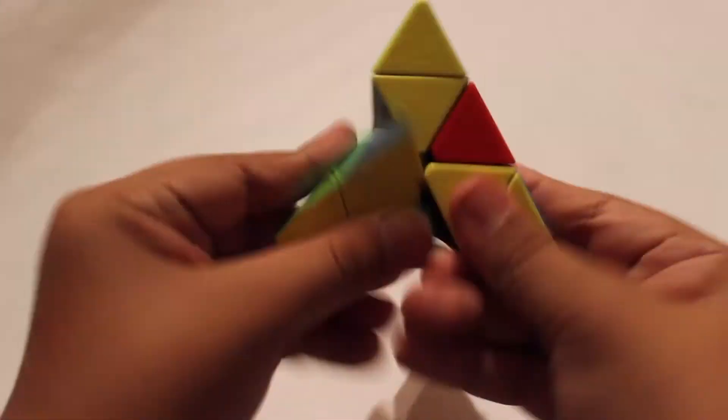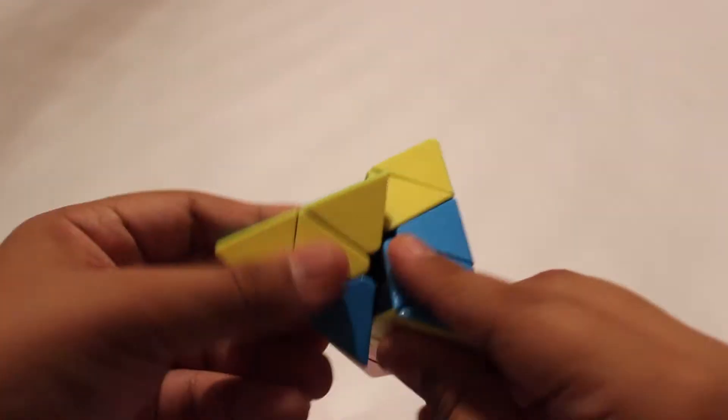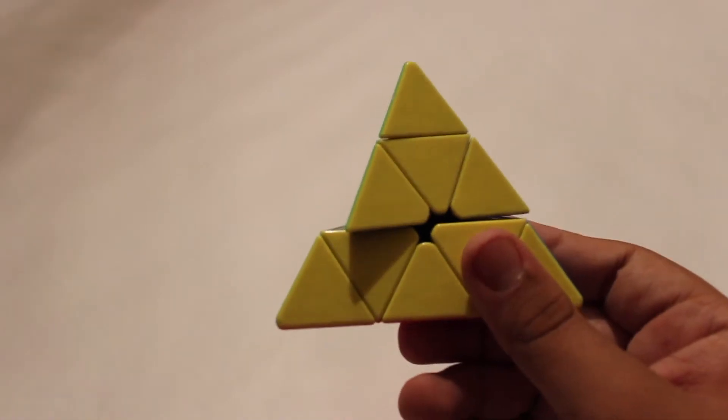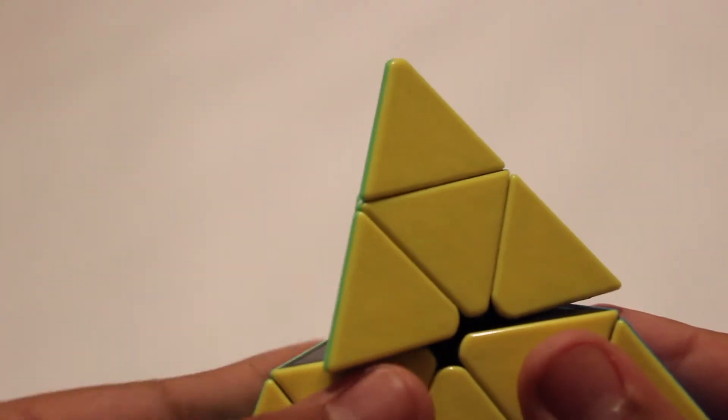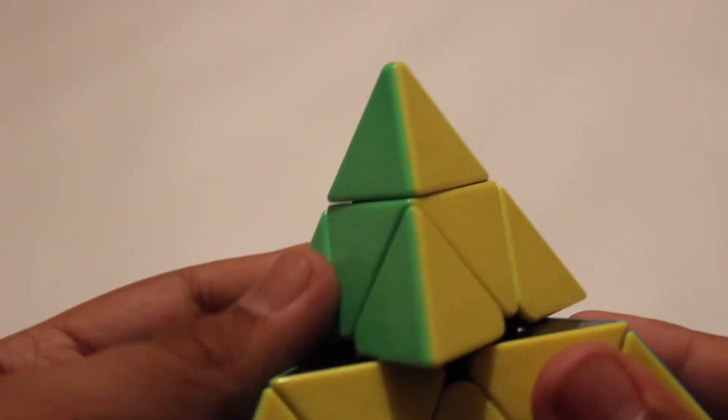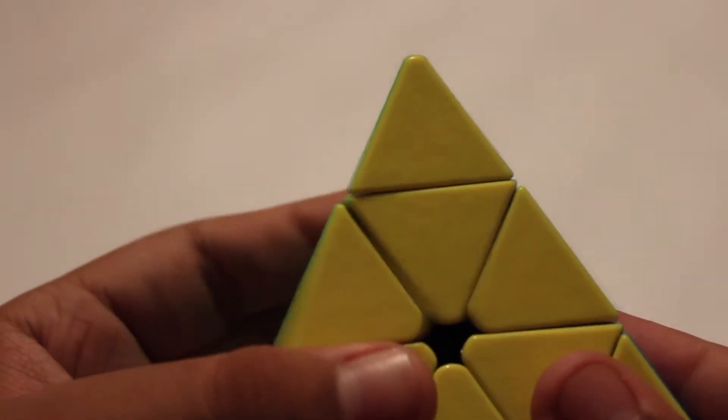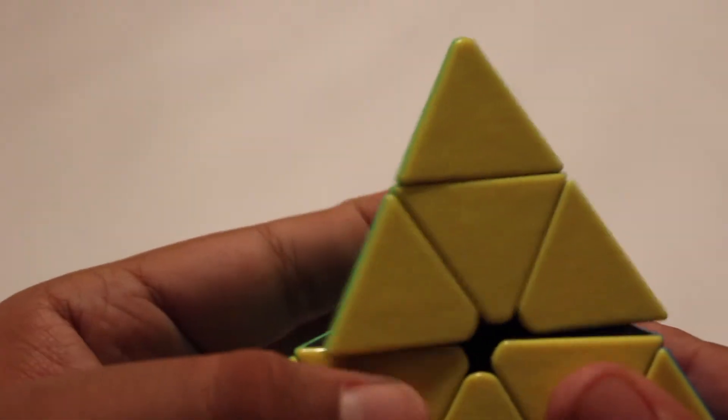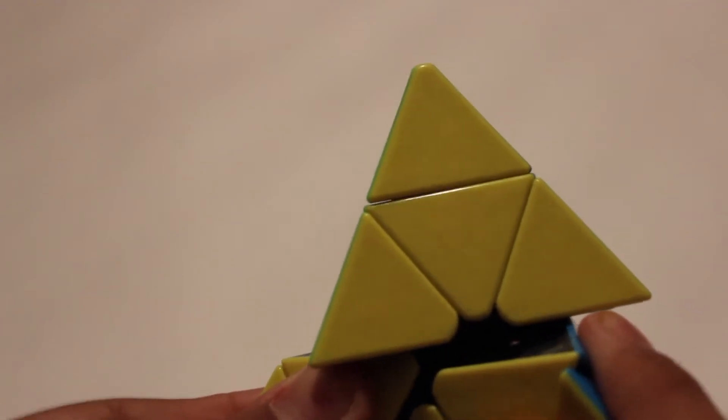As you can see, the Shang Shao Pyraminx has issues with locking up. This is corner cutting ability, which is fair to none. As you can see, it only turns up to right about there. After that, you need to add pressure to a point where you feel like you're going to break the puzzle. Like, one turn.